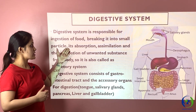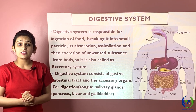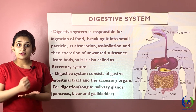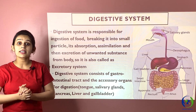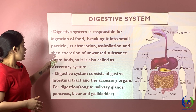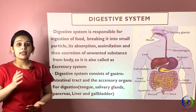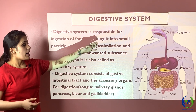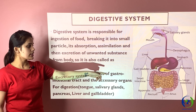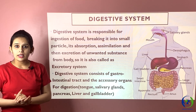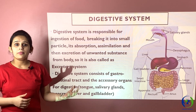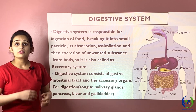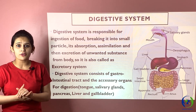The next is the digestive system, responsible for ingestion of food, its breakdown, assimilation, absorption, and excretion. It consists of the gastrointestinal tract and accessory digestive organs. The gastrointestinal tract includes the mouth, esophagus, stomach, small intestine, large intestine, rectum, and anus. The accessory organs — liver, pancreas, gallbladder, and salivary glands — assist in the process of digestion and are therefore called accessory digestive organs.